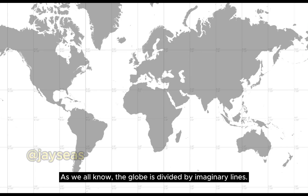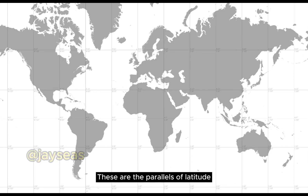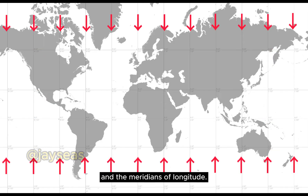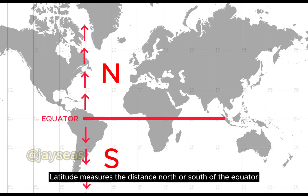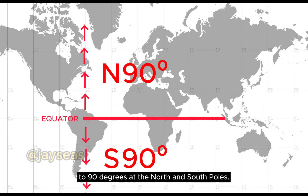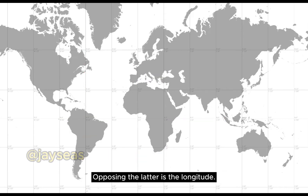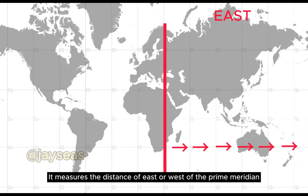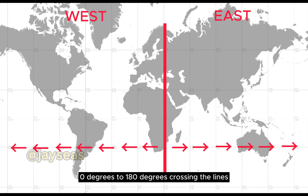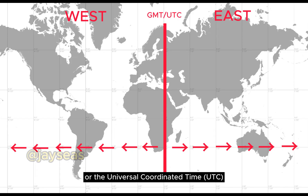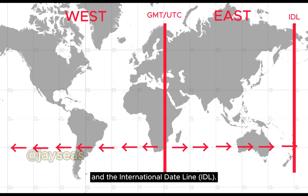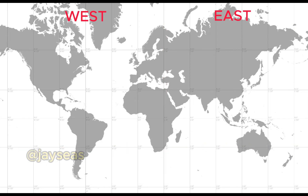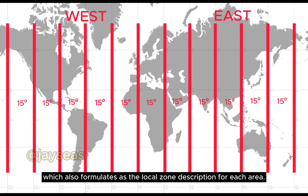As we all know, the globe is divided by imaginary lines — the parallels of latitude and the meridians of longitude. Latitude measures the distance north or south of the equator, measured in degrees from the equator to 90 degrees at the north and south poles. Opposing that is longitude, which measures the distance east or west of the prime meridian, 0 to 180 degrees, crossing the lines of Greenwich Mean Time (UTC) and the International Date Line. Every separation of the line is 15 degrees, which formulates the local zone description for each area.